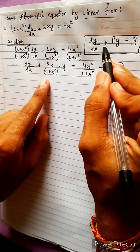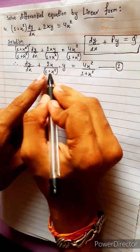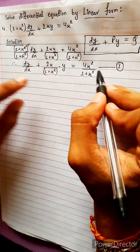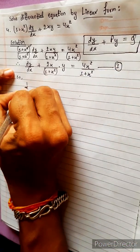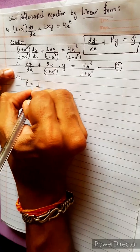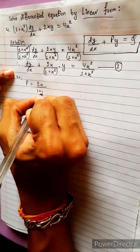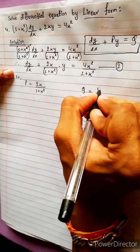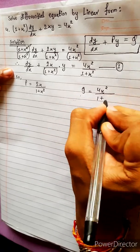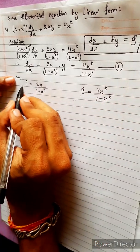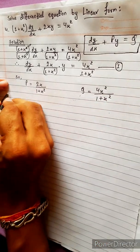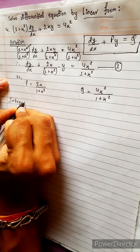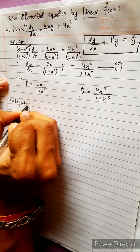Comparing: dy/dx plus Py equals Q. P is equal to 2x divided by (1 plus x squared). Q is equal to 4x squared divided by (1 plus x squared).